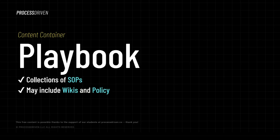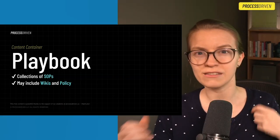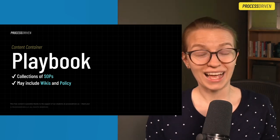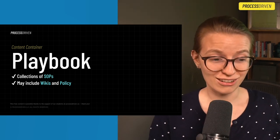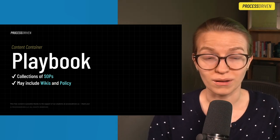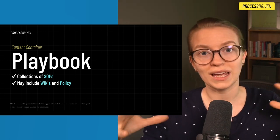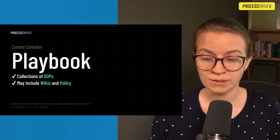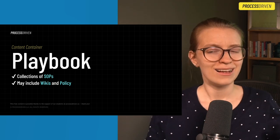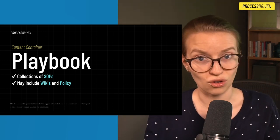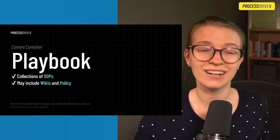The next content container is a playbook. A playbook is primarily used when talking about SOPs because a playbook is very action oriented — it's about what do you do, what is next. Like plays in a sport, it's about the plays or behaviors that you can do. Occasionally you might find wikis about general information or policies as to why you do those plays, but in general a playbook is focused on action, and the guidance of action is found in an SOP.